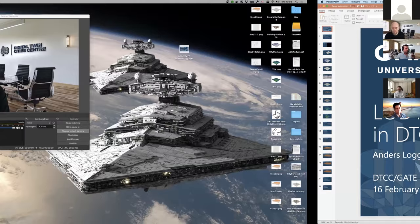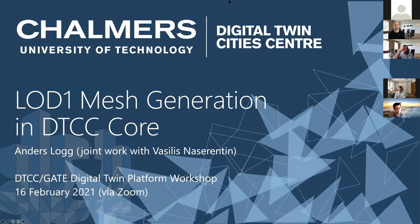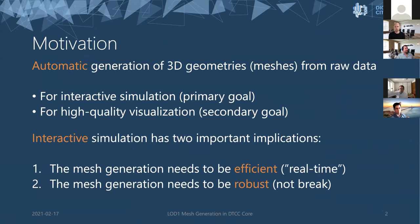This will be a quick run-through of a topic called LOD1 Mesh Generation in DTCC Core — joint work with Vasilis. The motivation is automatic mesh generation from raw data. Why would you want to do this? The primary goal is interactive simulation, and a secondary goal is high-quality visualization. The dream is to be able to define a geometry, move things around with your hands, and get results back in real time. For this to work, mesh generation needs to be very fast, efficient, and robust.